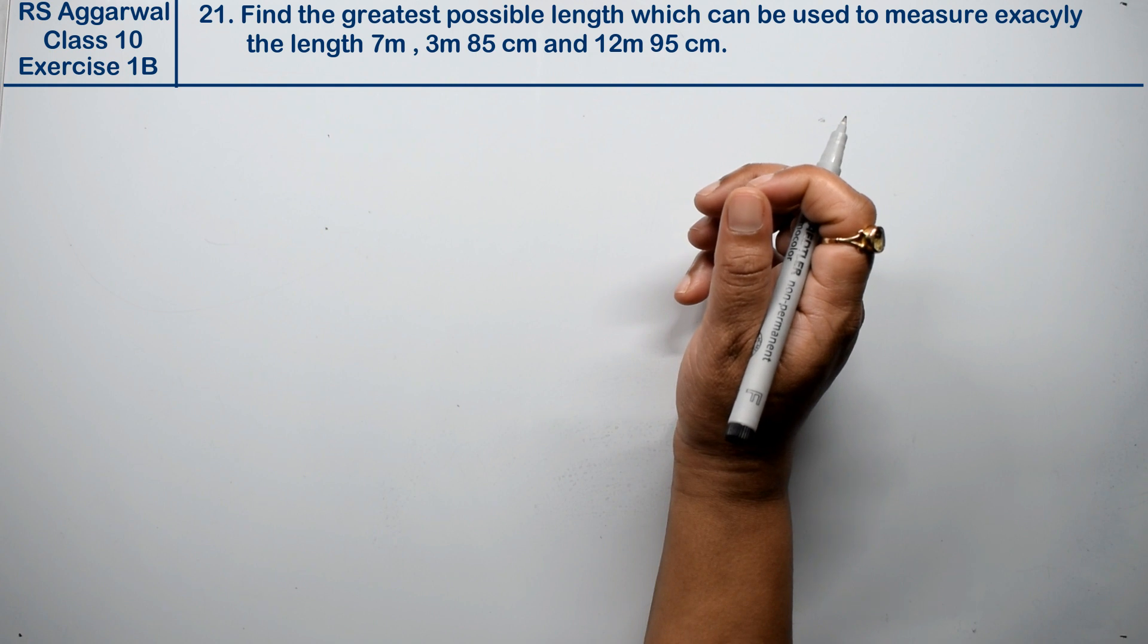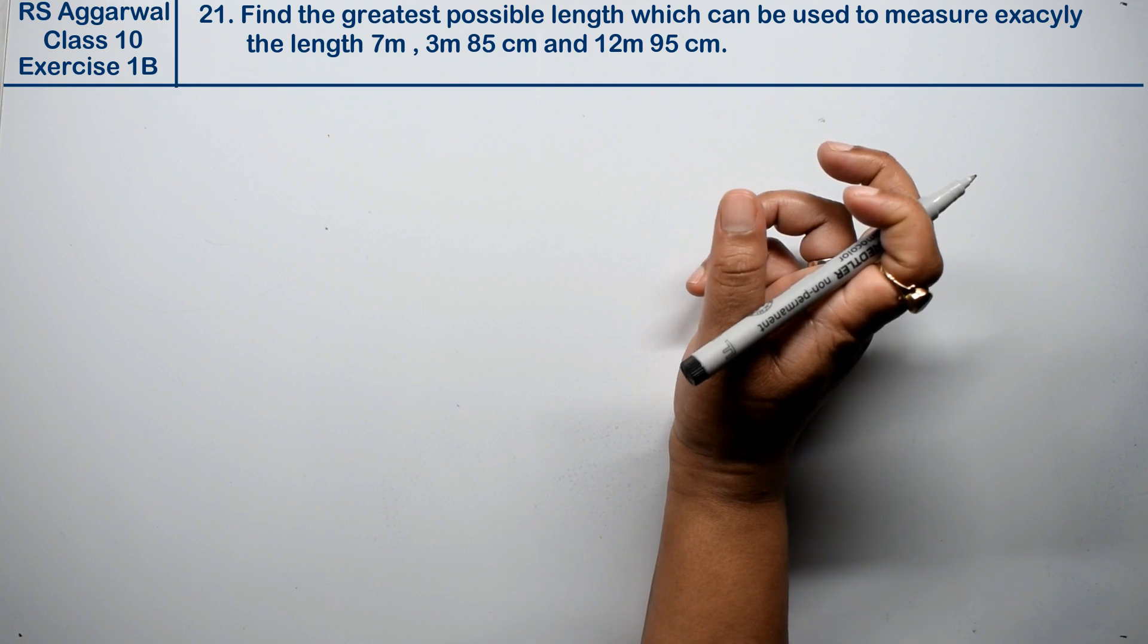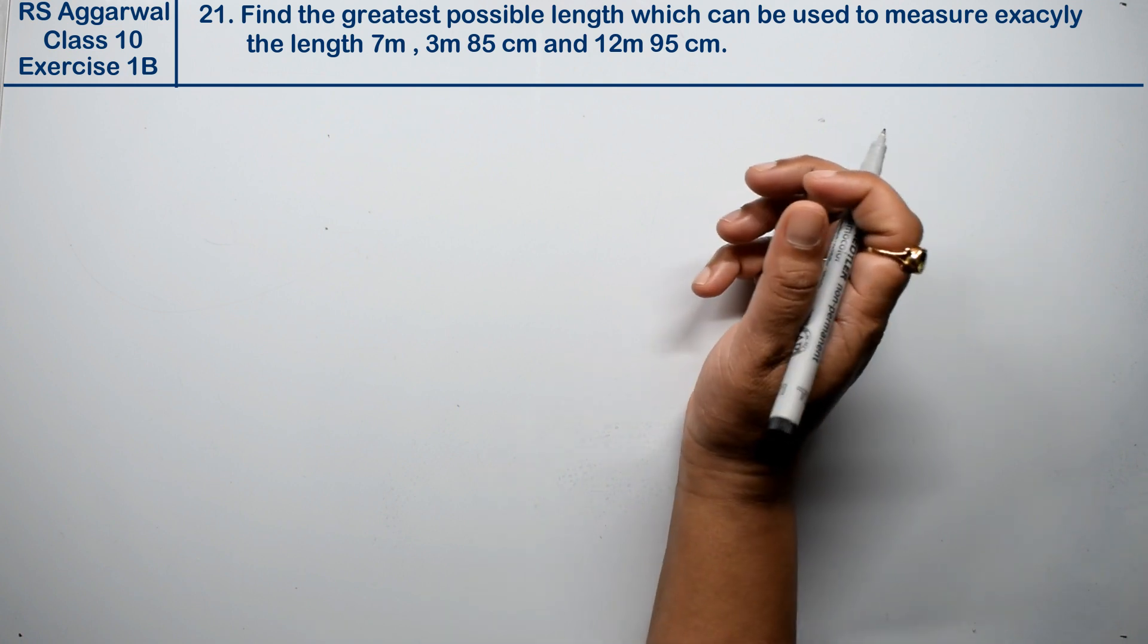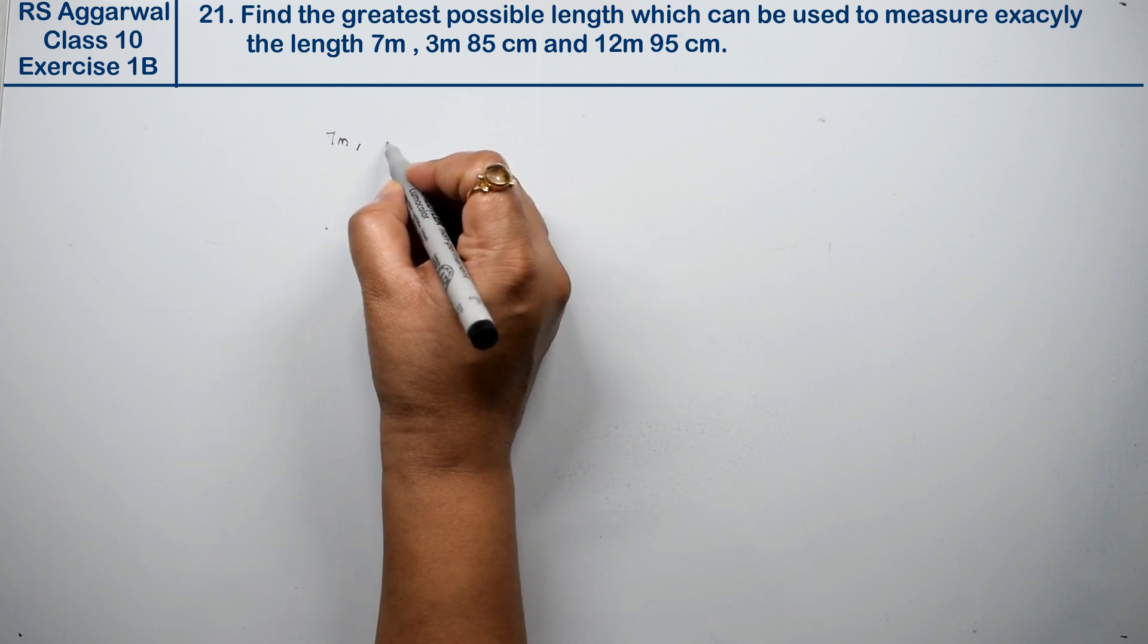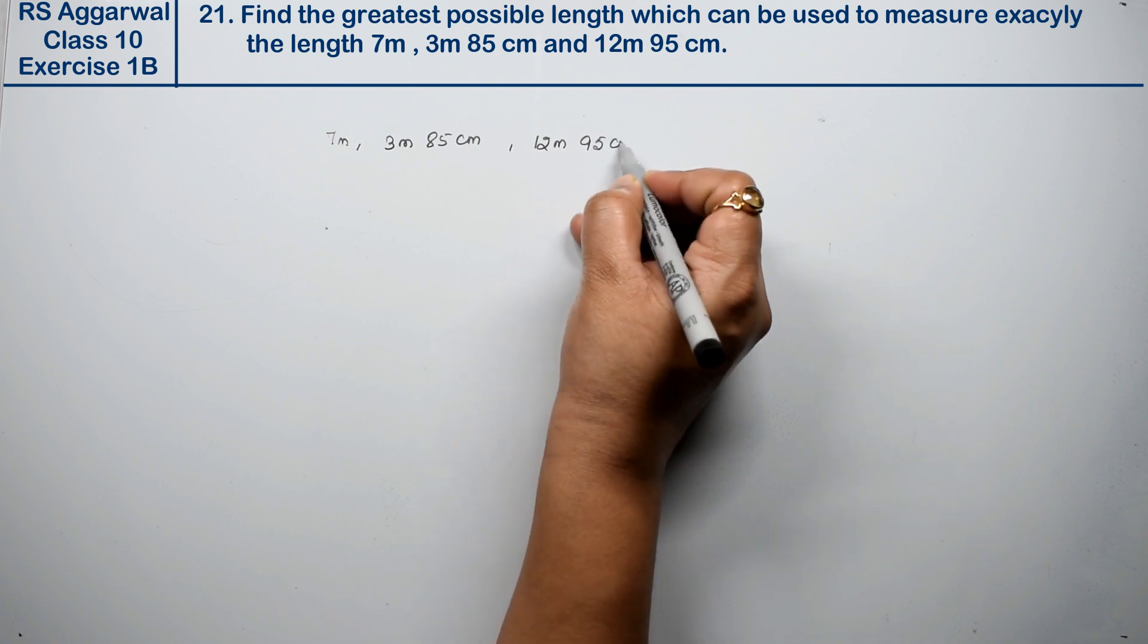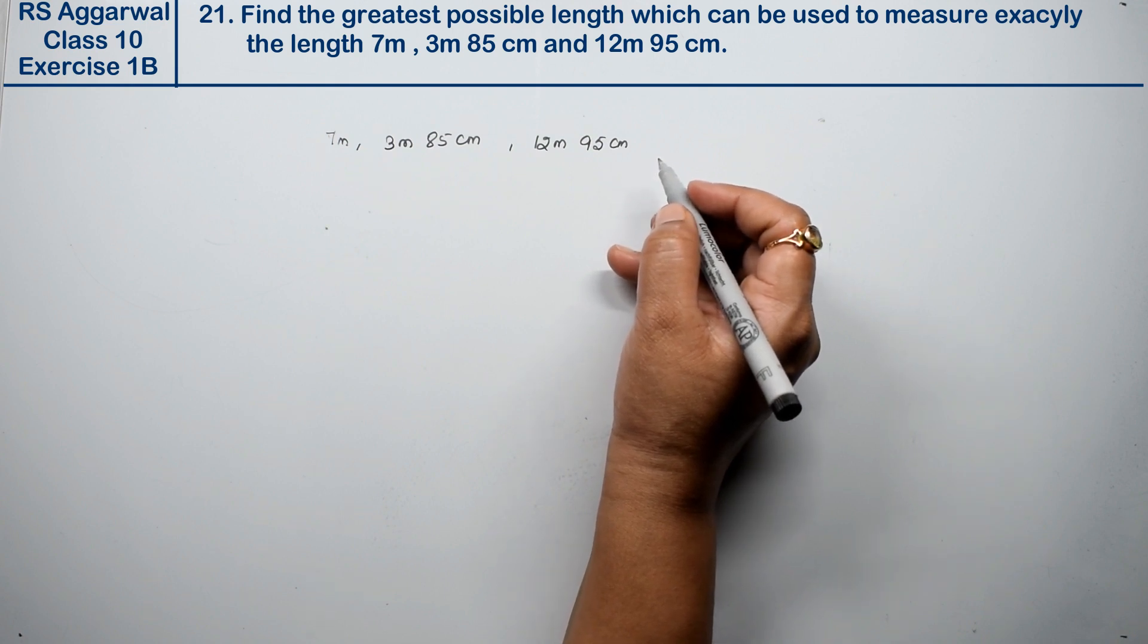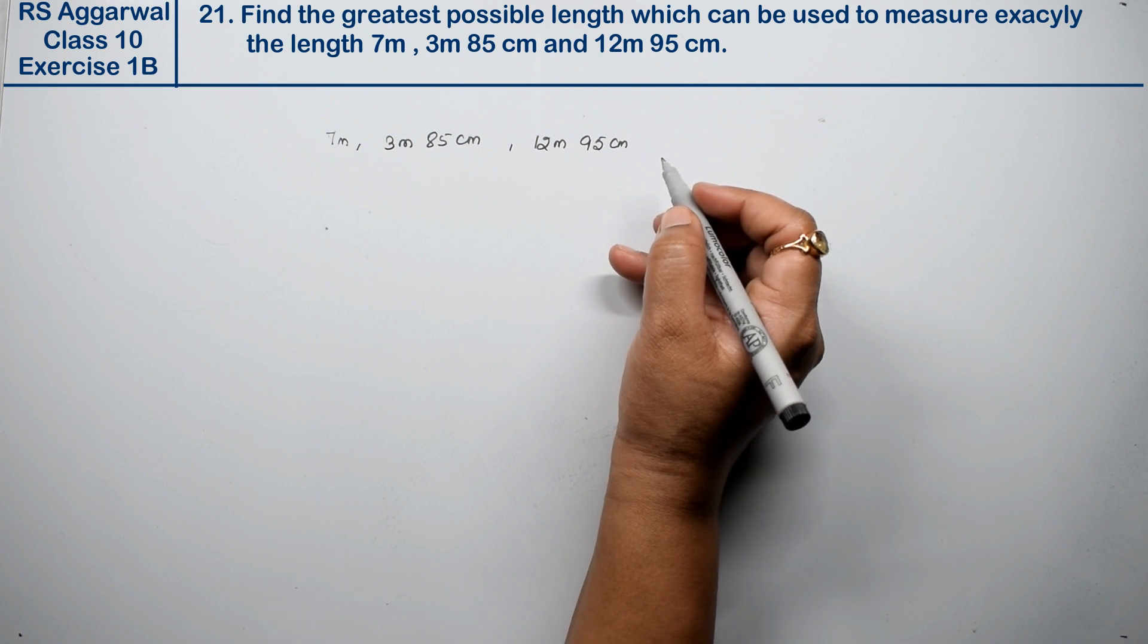Let's do question number 21 of exercise 1B, Real Numbers. Question 21 is: find the greatest possible length which can be used to measure exactly the lengths 7 meters, 3 meters 85 centimeters, and 12 meters 95 centimeters. To find the greatest possible length, we need the HCF - highest common factor.